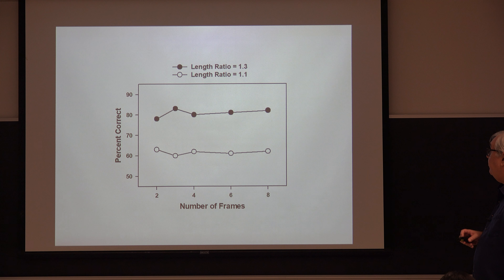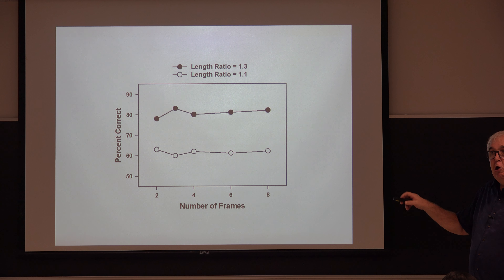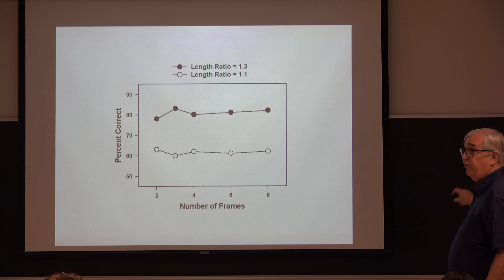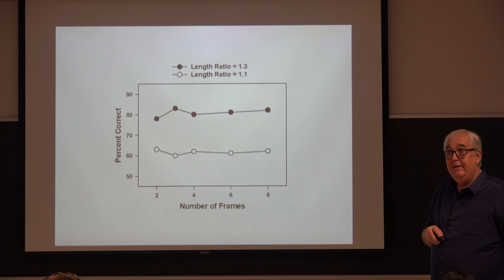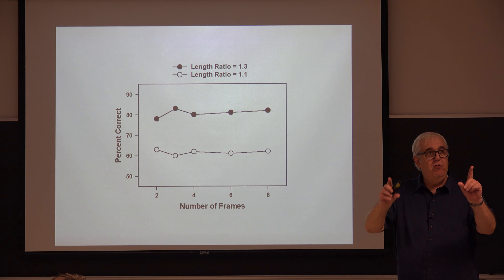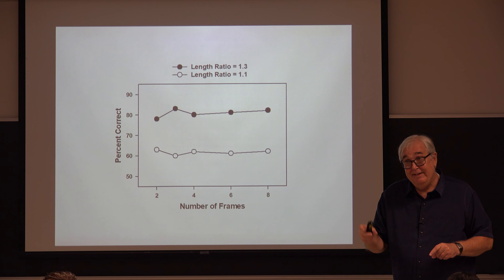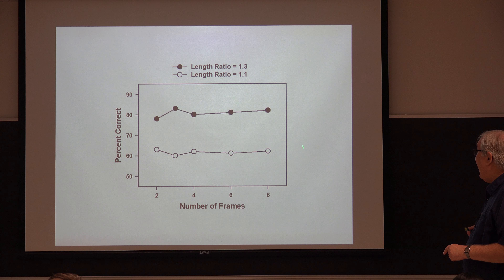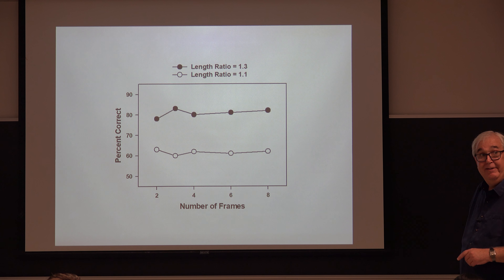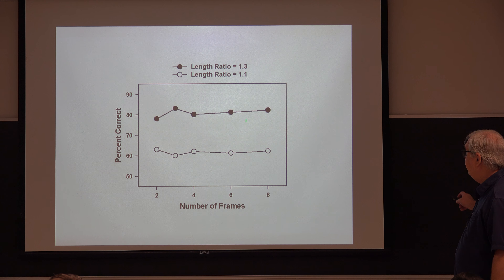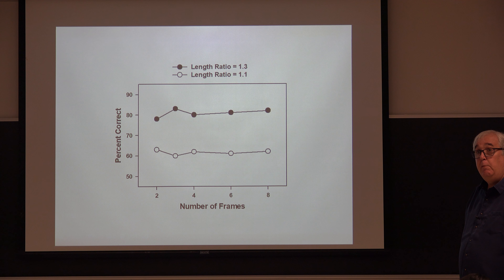Here are the results. The y-axis is percentage correct, with two different length ratios: in one condition the longer object was 30% longer, in another only 10% longer. Just to give context: if you're judging the length of two lines in the frontal parallel plane, you can detect a difference of 1%. Subjects aren't particularly accurate at this 3D task — threshold is right around 10%, which is 10 times worse. But the main thing that pops off the page is there's no effect of number of views. You're as good as you're going to get with just two views.